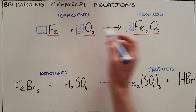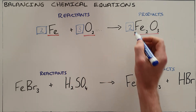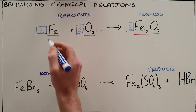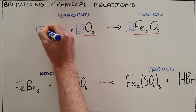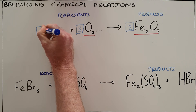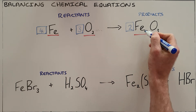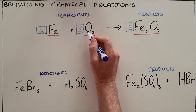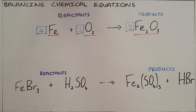By putting a 2 here I've thrown the iron out of balance. In our products I now have 2 times 2, which is 4 iron atoms, and in our reactants I only have 2, so I place a 4 in front of the iron. That gives us 4 iron atoms in the reactants, 2 times 2 is 4 iron atoms in the products, 3 times 2 is 6 oxygen atoms in the reactants, and 2 times 3 is 6 oxygen atoms in the products. This process repeats itself and you can do it for more complicated reactions as well.